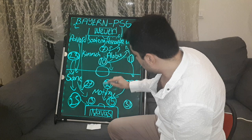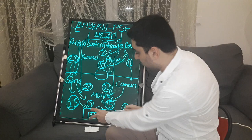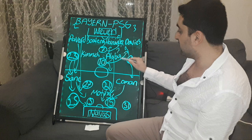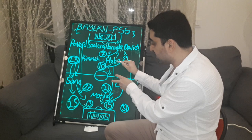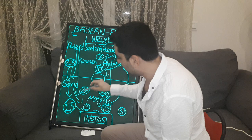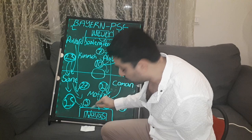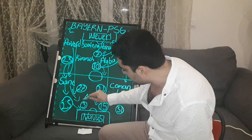Müller, Kimmich, and Alaba all pushed higher in the second half. Alaba came forward and had a shot saved by Keylor Navas from in front of the box. Kimmich was taking all free-kicks and corner-kicks for Bayern. From a free-kick on the left side of PSG's defense, Müller scored Bayern's second goal with a header at the near post, jumping over defender Kimpembe. The score was level at 2-2.